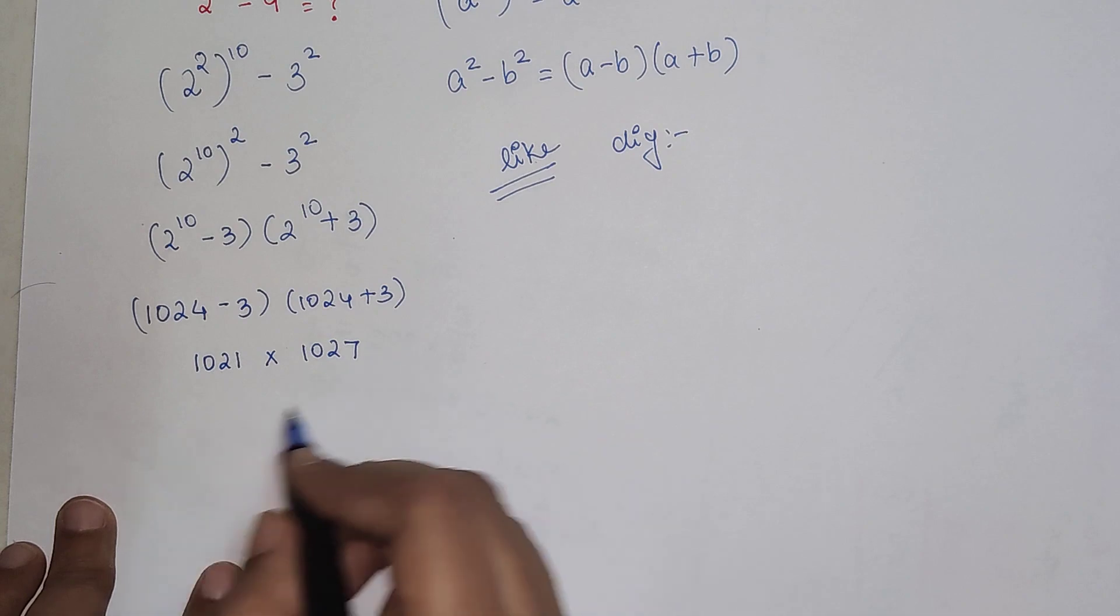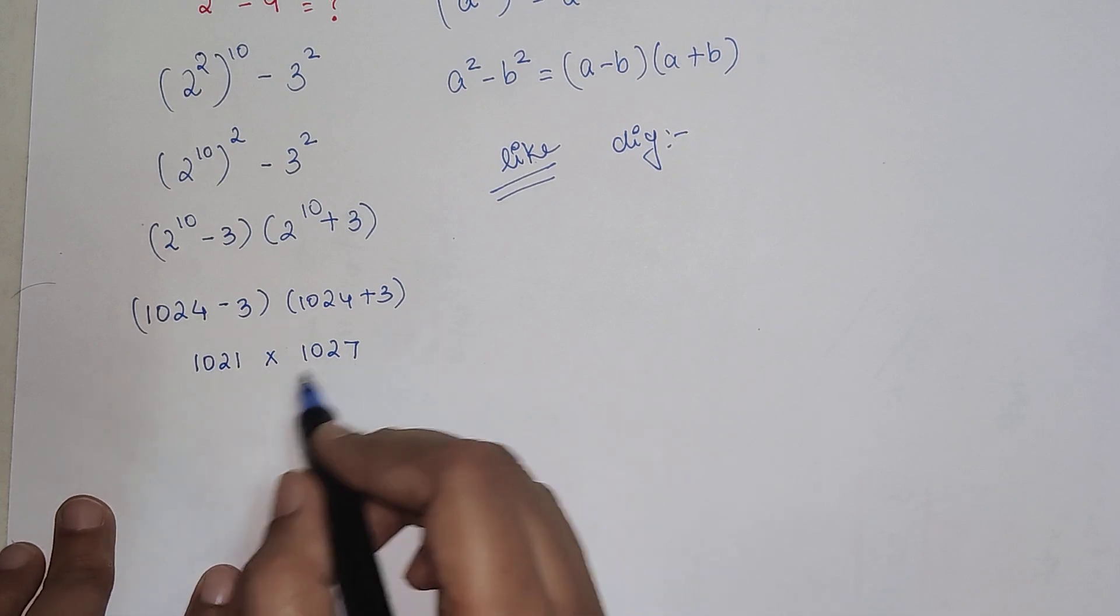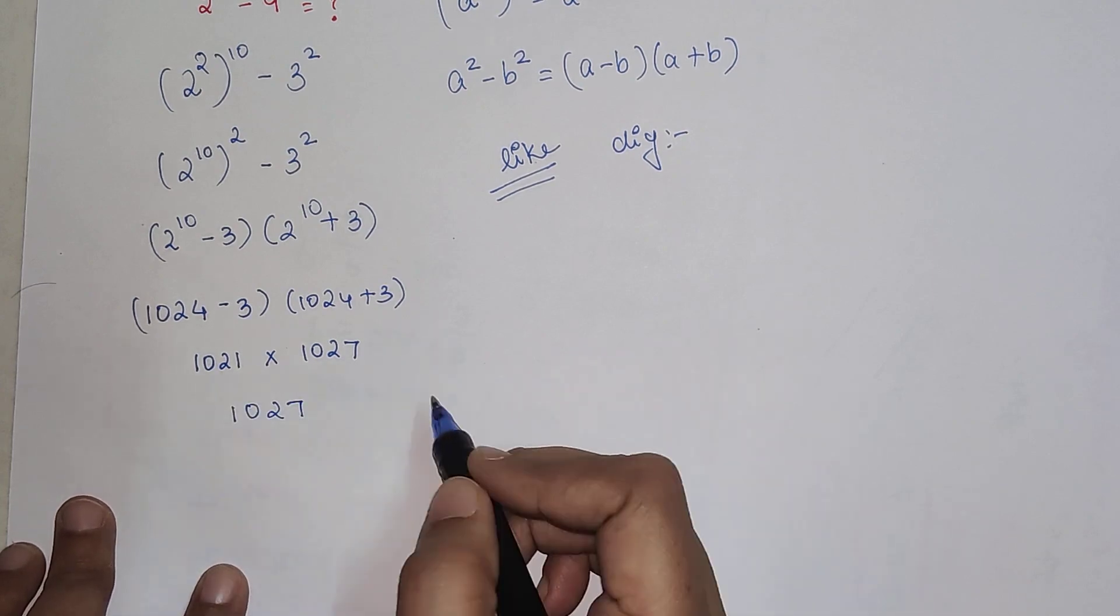This comes out to be 1021 × 1027. Now let's do this multiplication. 1 multiplied by 1021 will get you 1027.